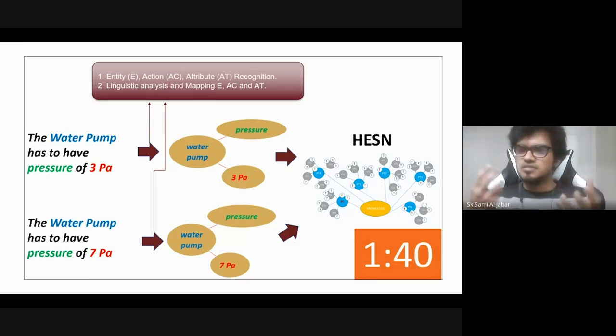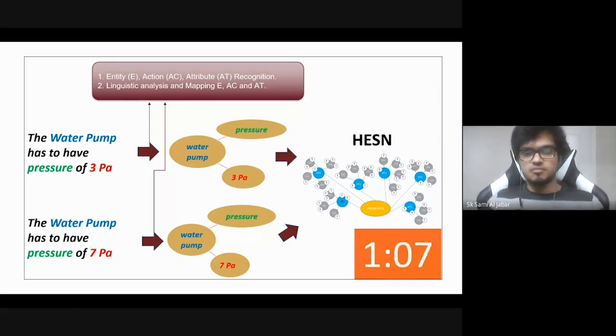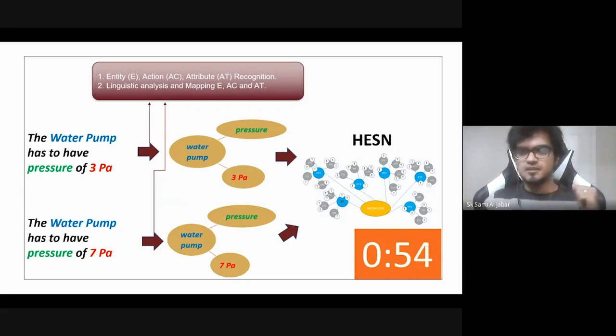It then creates a relationship among these terms in the form of a network, and this network is the building block of HESN. We get one network for each instruction of an operation. So from HESN, we get information about different entities found in the document, but the unique part here is HESN captures information about each entity differently for different operations. For example, you can see here we have two instructions, two different instructions from two different operations. The first one says water pump has to have pressure of three pascal, and the second one says the water pump has to have pressure of seven pascal. So we have the same entity, water pump, we have the same attribute, pressure, but two different values for two different operations. This structuring is done using HESN, and that is my research.